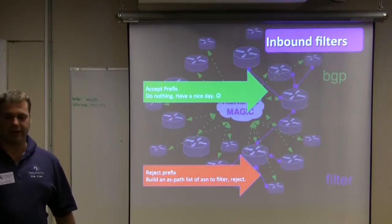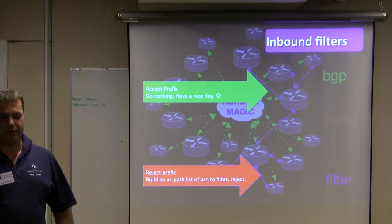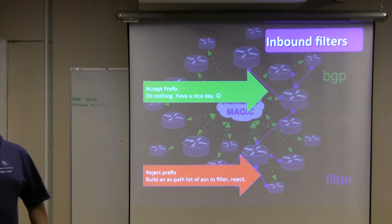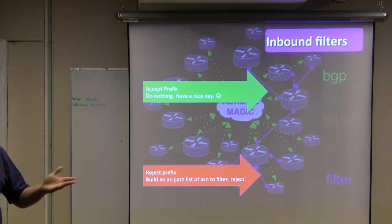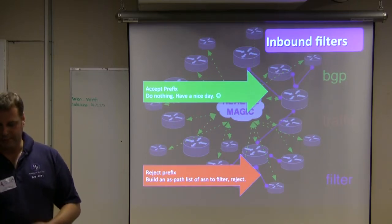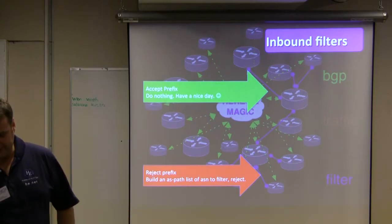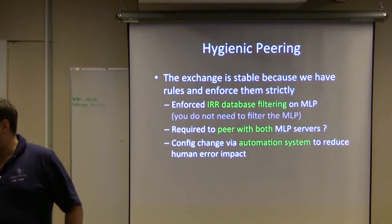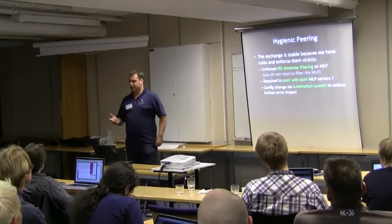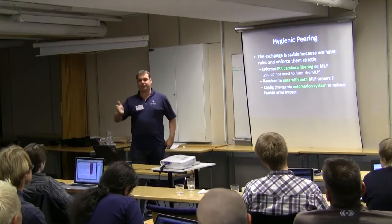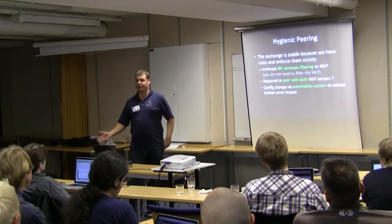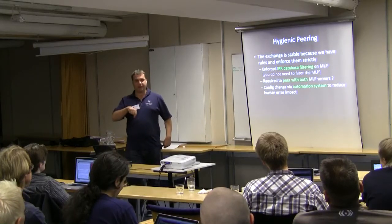On inbound prefix filtering, in order to reject the prefixes of another member, right now you have to build an AS path filter so you can say: I'd like to receive all the prefixes but not the prefixes from AS123. You have to build a route map or something that matches your route server config and denies those prefixes from being learned over the route server session. If you want to accept the prefixes, you do nothing — that's the easiest method. It's a good way of peering with somebody you might not fully trust, because the route servers already filter based on data in their own database. So if someone tries to leak a prefix that isn't inside their AS set registered with the exchange point, that prefix will be dropped on the route server and you won't receive it.